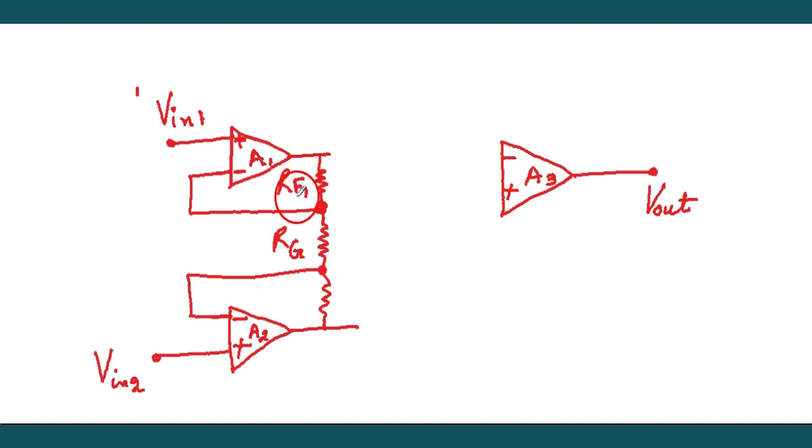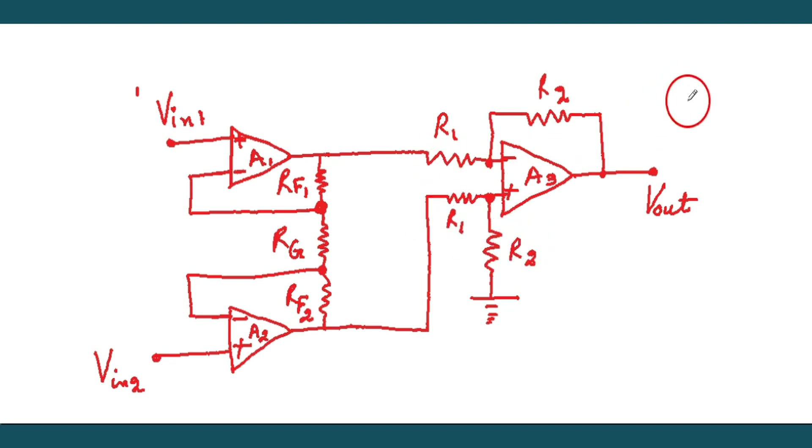This RG resistor, Rf1, Rf2, let we call like this. Then output of A1 is also attached to the inverting of A3 through the non-inverting of A3 through the two resistors, that is R1 and R2.